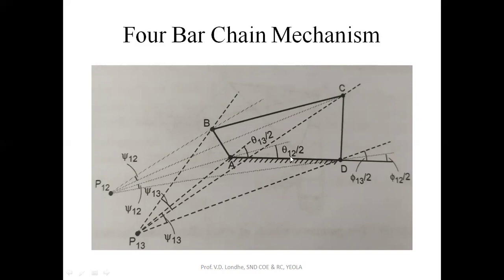For the second and third positions, working through point A to get pole points P13 and P12: first, take angle theta-1-2 divided by two for the second position of the crank, and half the second position of the output link — these lines intersect at P12. For the third position, take theta-1-3 divided by two and half the third position of the output link — these intersect at P13. Then join P12 to B and P13 to B.